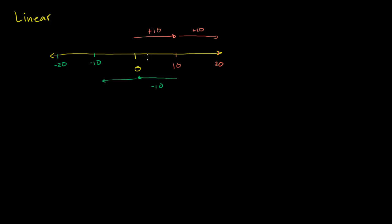Where would 5 be? To get to 5, we only have to go half of 10, so we go half this distance. That gets us to one half times 10, which is 5. Going to the left that half distance gets us to negative 5. There's nothing really new here — we're just thinking about it in a slightly novel way that will be useful when we start thinking about logarithmic scales.